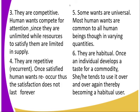Some wants are universal. Most human wants are common to all human beings, though in varying quantities. For example, food, clothing, education — but they keep varying from one person to another. Number six: they are ambitious. Once an individual develops a taste for a commodity, he intends to use it over and over again, thereby becoming an ambitious user.